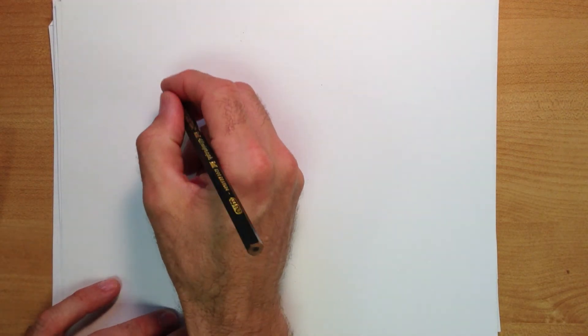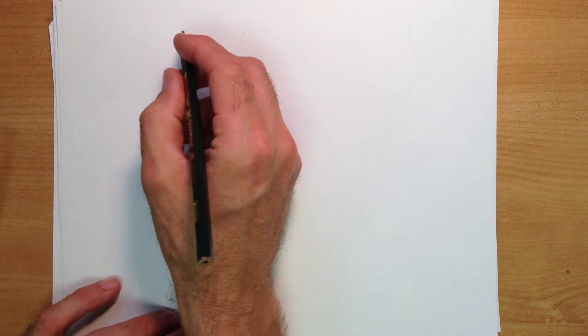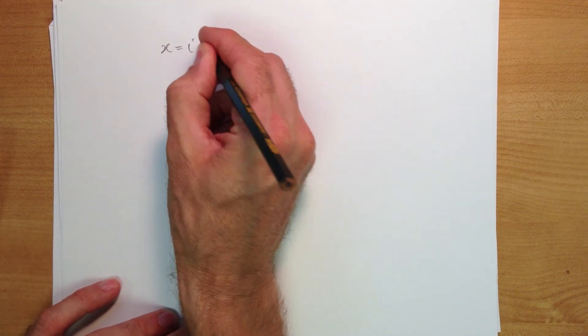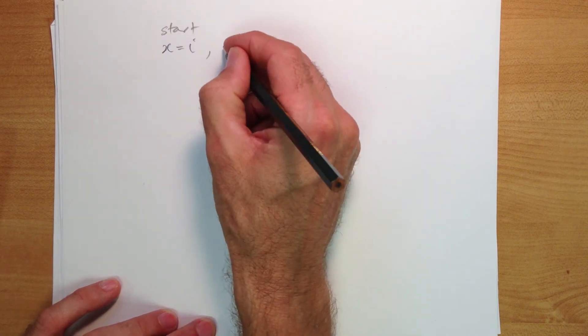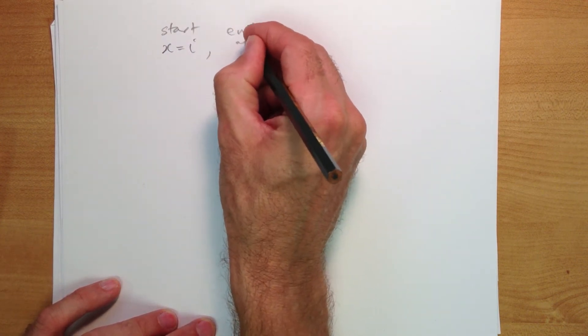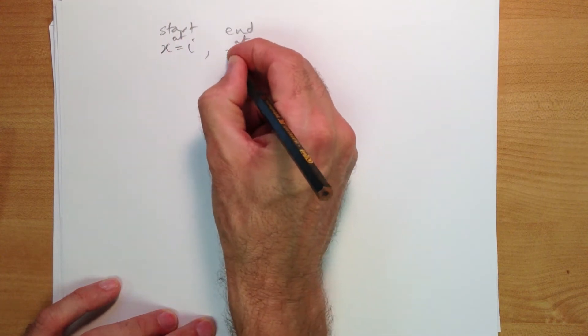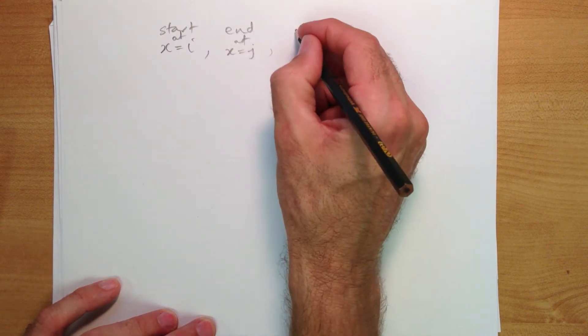Alright, so we want to count the number of random walks that start at i, so x equals i, and we end at x equals j, and we take a time t.